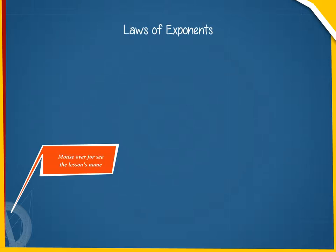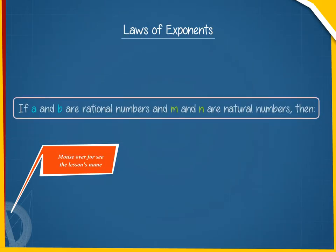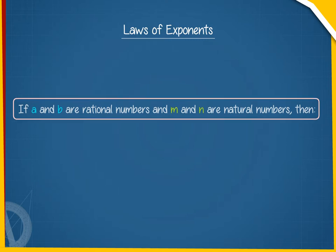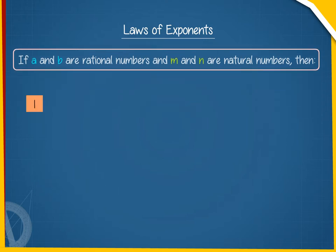Laws of Exponents: If A and B are rational numbers and M and N are natural numbers, then Law 1: A raised to the power M, multiplied by A raised to the power N, equals A raised to the power M plus N.